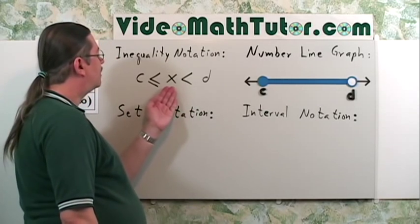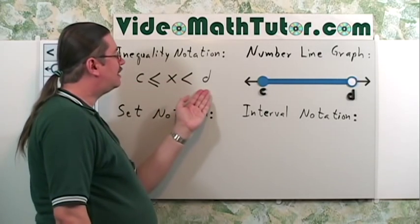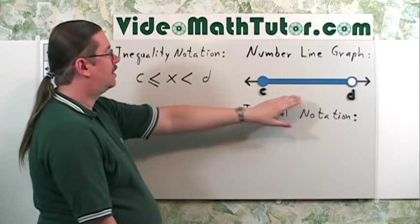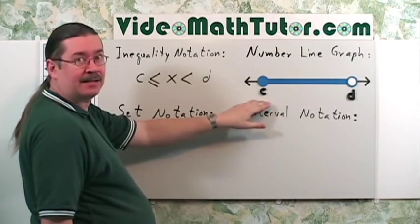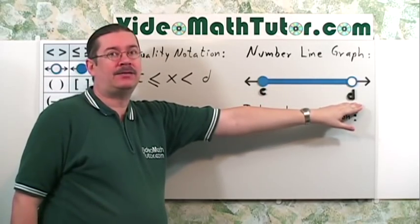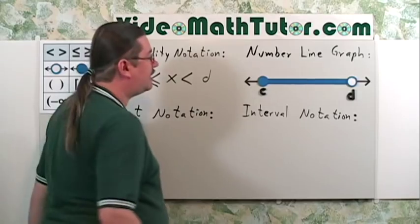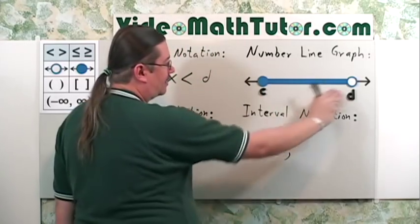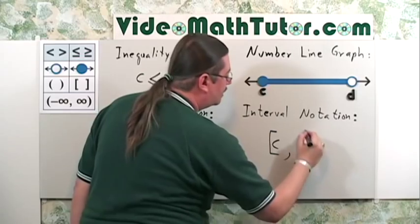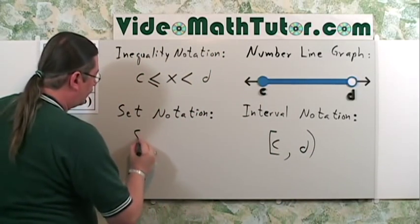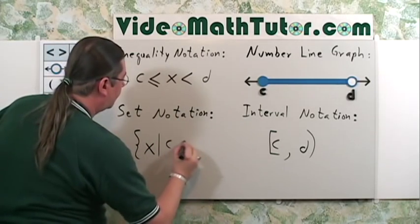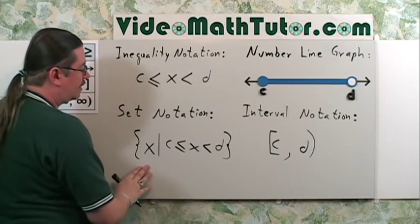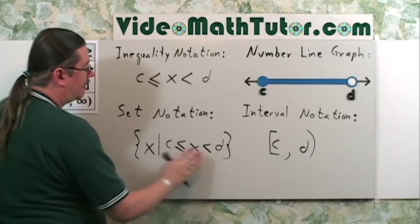This inequality says x is in between c and d and includes c. The number line graph shows all values between c and d: c is a closed dot since it's included, and d is an open dot since it's not included. For interval notation, it starts at c with a square bracket and stops at d with a parenthesis. For set notation: the set of all x's such that x is in between c and d and includes c.